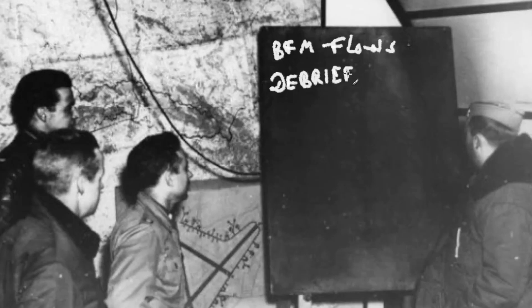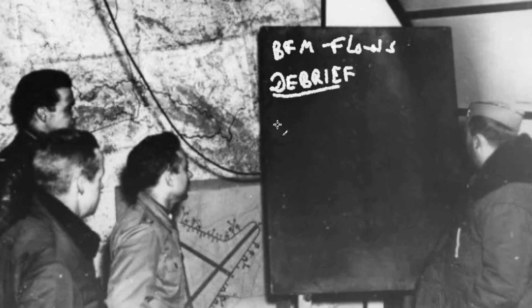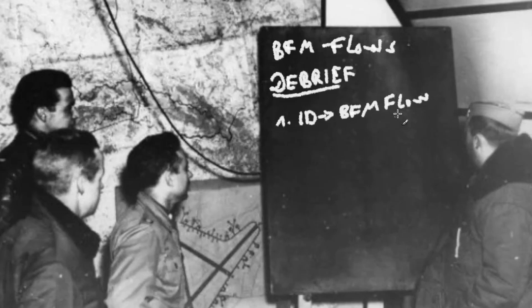So we did see that what we learned in our theory session did indeed play out well. There are two things you should take away from this session: in order to fly your proper BFM game plan, you need to identify the BFM flow first. So as soon as you merge, identify what you're in — you can either be in a two circle or a one circle.